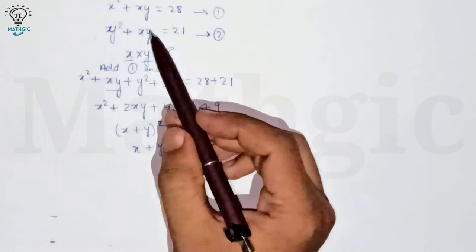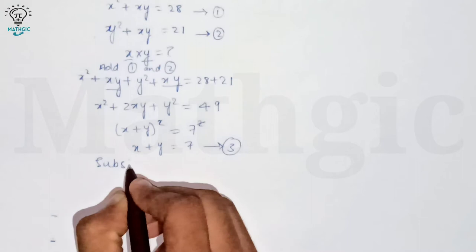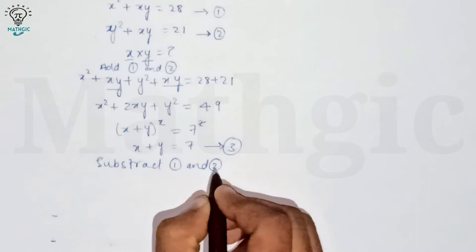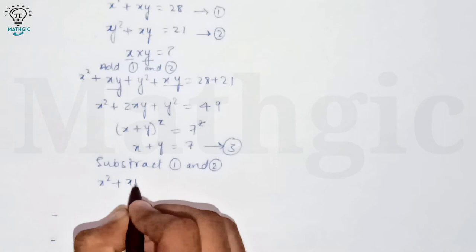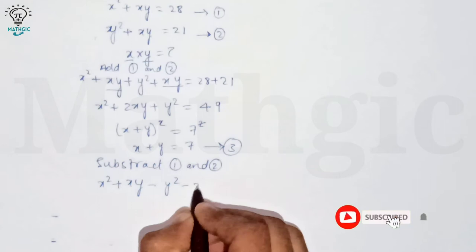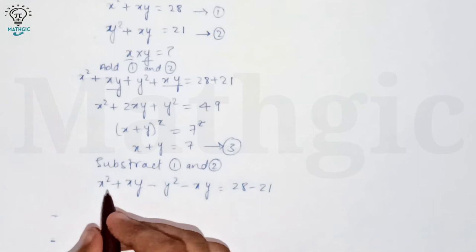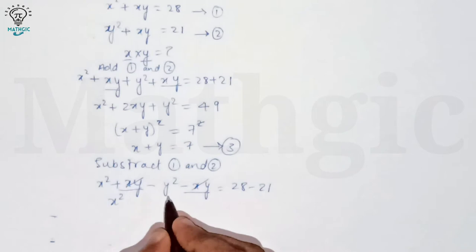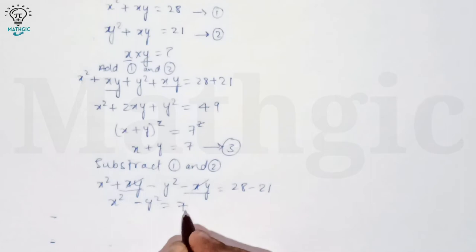Now subtract equation two from equation one. That is x squared plus xy minus y squared minus xy equals 28 minus 21. The xy terms cancel, so we get x squared minus y squared equals 7.